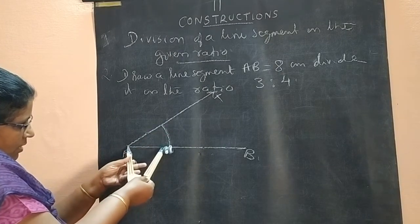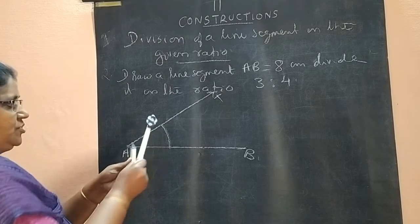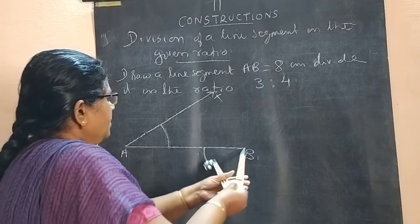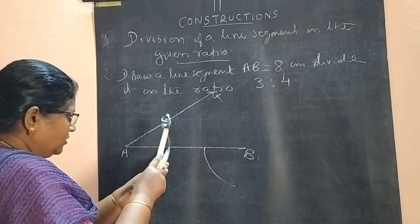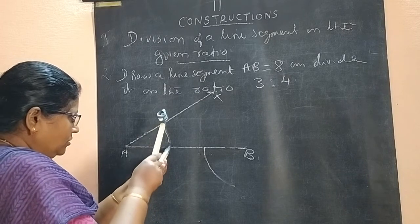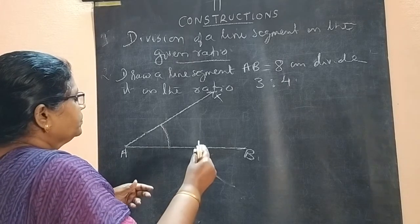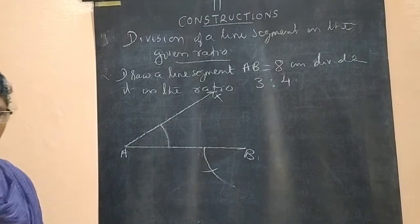Draw an arc with the same radius. Don't change the radius. This is the radius. Keep the compass at B, draw an arc. Then take this length, arc length you take accurately. From here, cut. From here you cut.